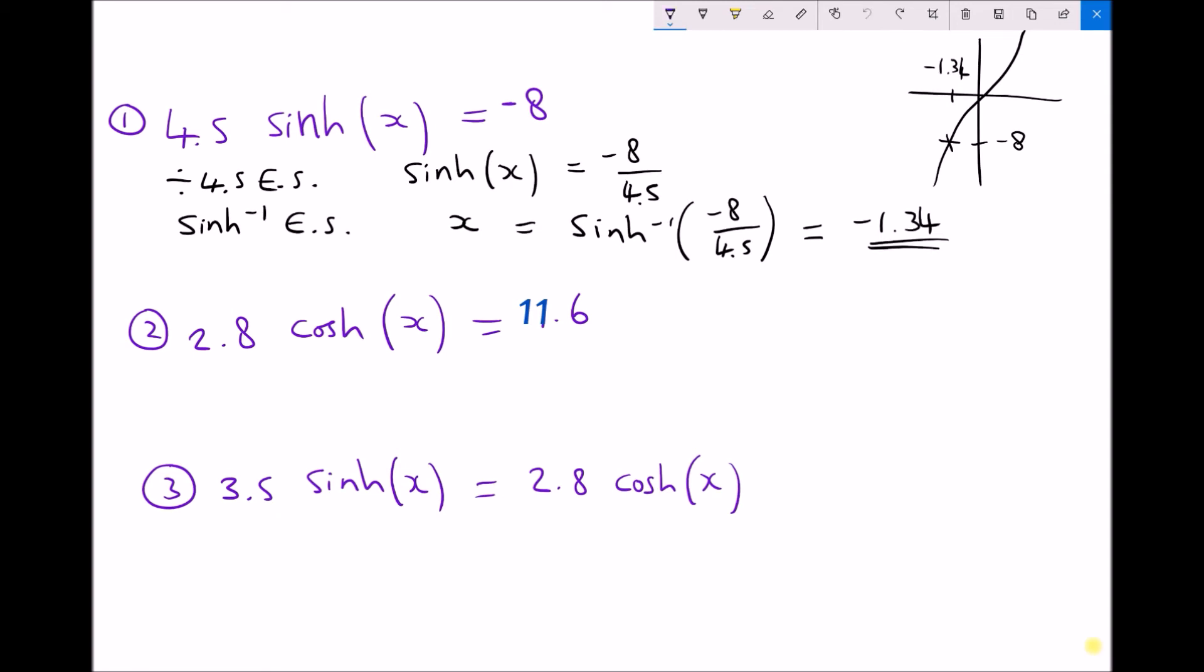So let's move on to our cosh function. And here we have 2.8 cosh(x) equals 11.6. Now the first thing we need to do as before is isolate cosh(x). And we're going to do that by dividing each side of our equation by 2.8. Because when we divide the left side by 2.8 we'll just be left with cosh(x). And when we divide the right hand side by 2.8 we get 11.6 divided by 2.8 which will just be a number.